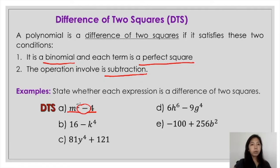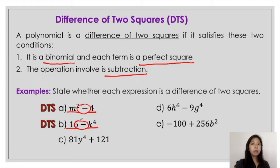For the second example, it's a binomial — it consists of two terms. The first term is 16, which is a perfect square. Here, k raised to 4 is also a perfect square. So the first condition is satisfied. Now for the second condition, the operation involved is subtraction. So that is also a difference of two squares.